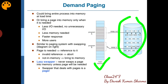Demand paging के कुछ advantages हो सकते हैं: आपको less memory requirement रहेगी, faster response रहेगा, more users एक साथ work कर सकते हैं। More users means logical memory में कितने भी users हों, बहुत सारे programs आएं और main memory हमारी fixed है तो swap in swap out process चल रही है और उसके through हम लोग same main memory से, जो कि हमारी smaller है, उससे भी implement कर पा रहे हैं।